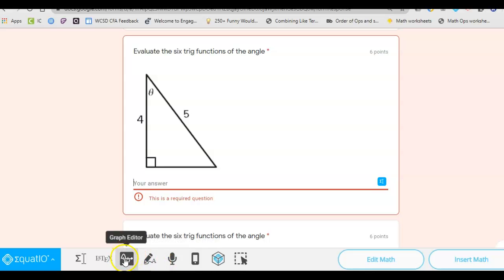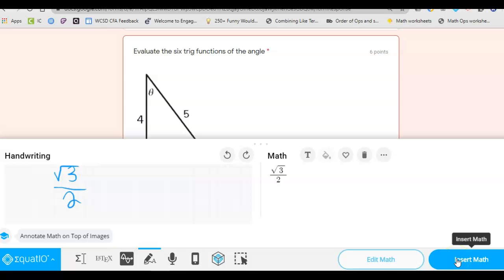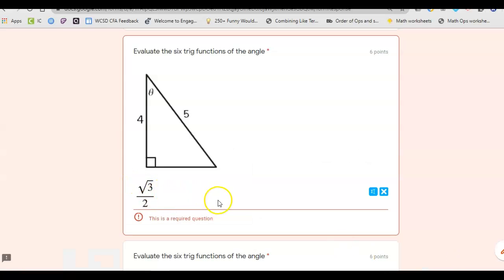So one of the ways that you can do it is just by handwriting recognition. So on the left side, like if you use your trackpad, let's say that your answer is radical three over two. So if you start typing in radical three over two, you can see over here that it is typing, it is changing this handwriting over here into a math expression. And once you have what you think is correct, you can click insert math. And it will insert that as one of your answers.